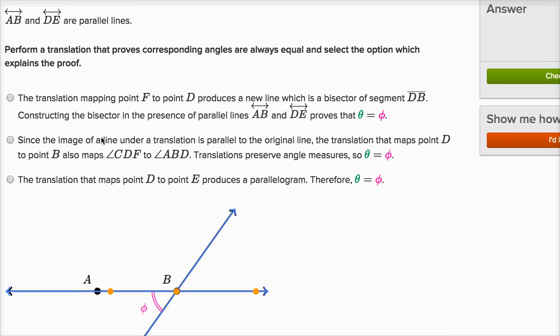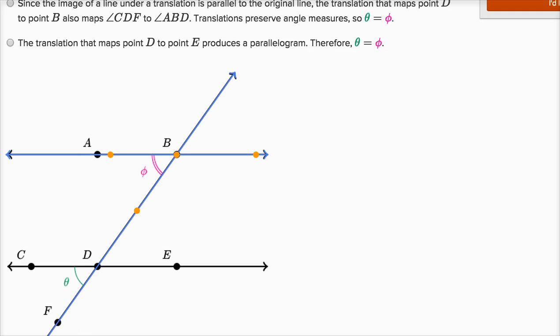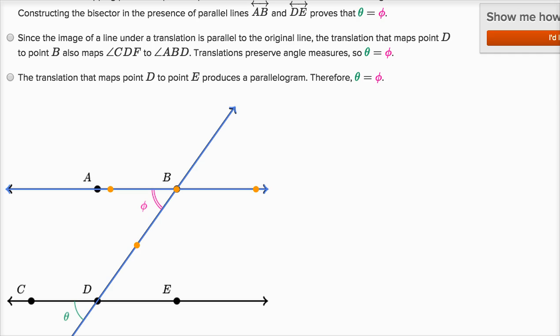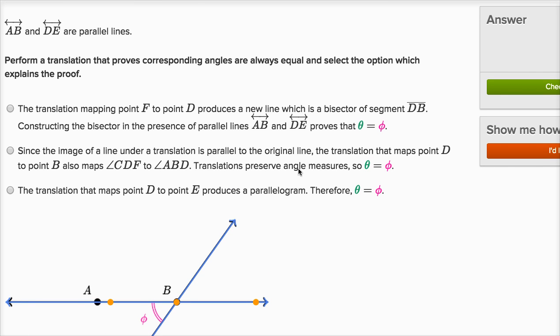Since the image of a line under translation is parallel to the original line, that's true. The translation that mapped point D to point B, that's what I did right over here, maps angle CDF to ABD, and that's what I did. I mapped angle CDF to angle ABD. Translations preserve angle measures, so theta is equal to phi. Yep, that one looks pretty good.